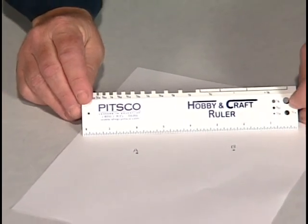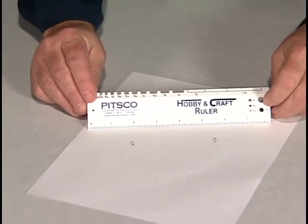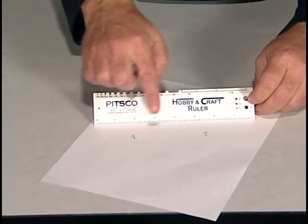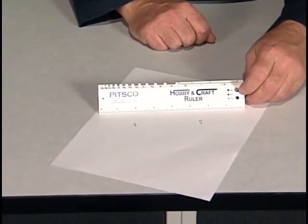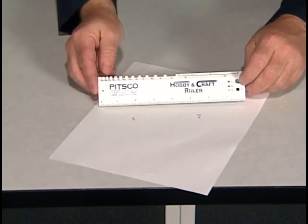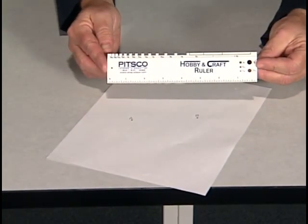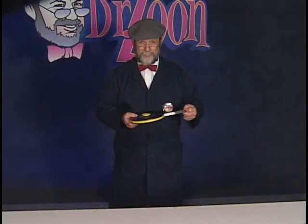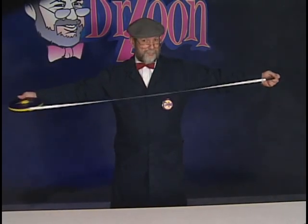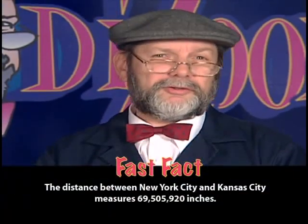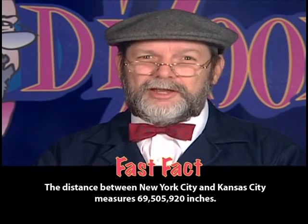A ruler like this is great for measuring the distance between these two points on this sheet of paper. However, it would be difficult to measure the distance across the football field with this measuring tool. For a football field, we might want to use a tape measure like this one. Or if we wanted to measure the thickness of this piece of paper, that would require a different tool as well.